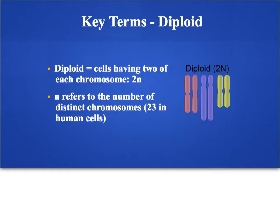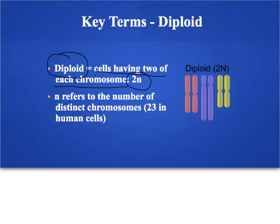In a human, we have 23 different chromosomes, but we actually have two copies of each of those chromosomes. In that previous picture we had two chromosome 1s, two chromosome 2s, and so on. If you have a cell that has two copies of each chromosome, the word we use for that is diploid — meaning you have two copies of each chromosome. We also refer to that cell as being 2N, where N refers to the number of distinct chromosomes. So we have 23 chromosomes and two copies of each, making us 2N, or diploid.